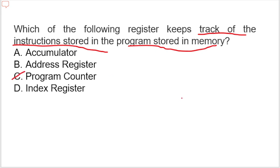The program counter monitors the execution of instructions. It keeps track of which instruction is being executed and what the next instruction will be. The program counter also contains 12 bits that hold the address of the next instruction to be read from memory after the current instruction is executed.